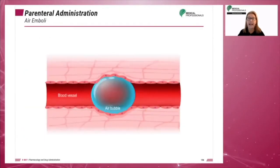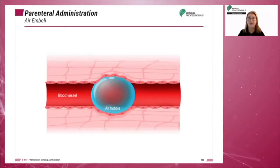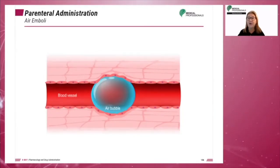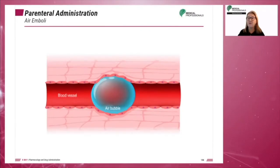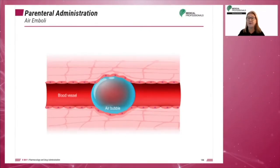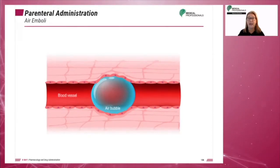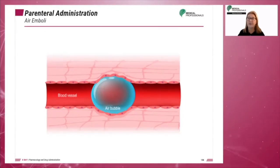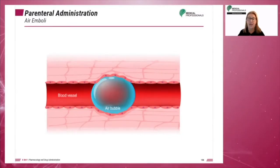Air emboli is air in the circulatory system. An air embolus as small as one milliliter in the arterial circulation may travel to the brain or coronary arteries, causing significant blockage.